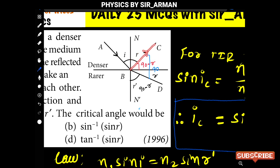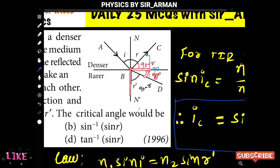The total angle between the reflected and refracted rays is 90 degrees. The angle we obtained is 90 minus r, and since the total angle is 90, this gives the angle of refraction r-dash equals 90 minus r.